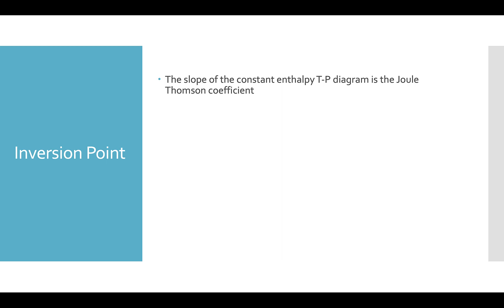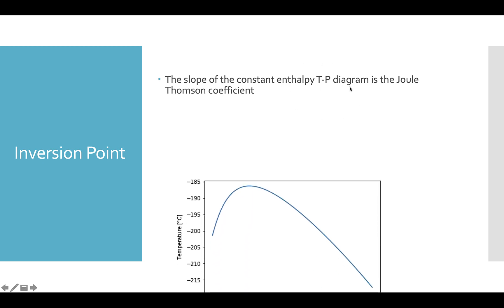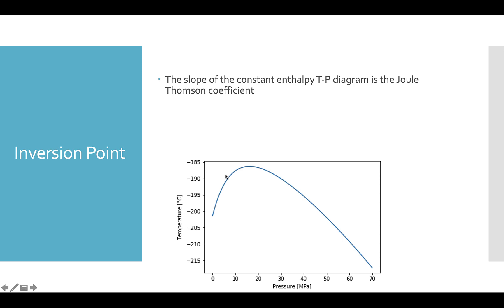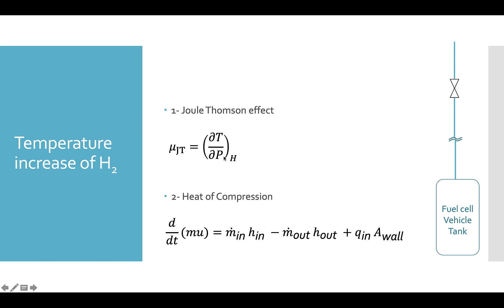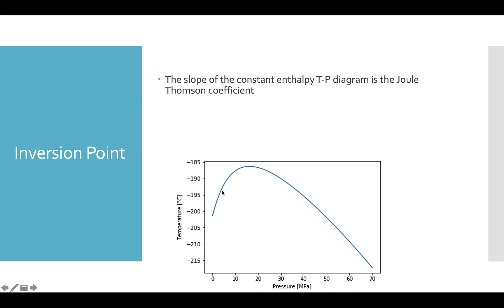If we draw a constant enthalpy curve on the T-P diagram, the slope of that curve is going to be the Joule-Thomson coefficient — this is the slope of the T-P diagram at constant enthalpy. Depending on your temperature and pressure, you'll get some slope, and whether it's positive or negative is going to determine whether your Joule-Thomson coefficient is positive or negative.